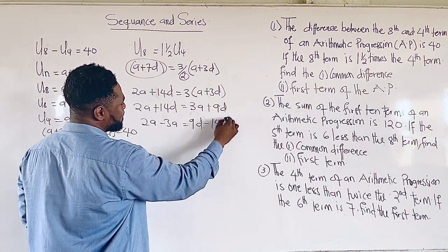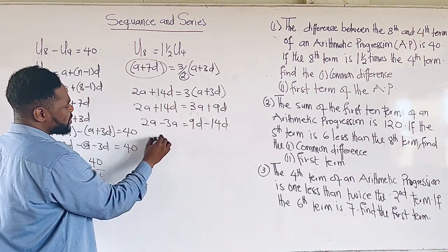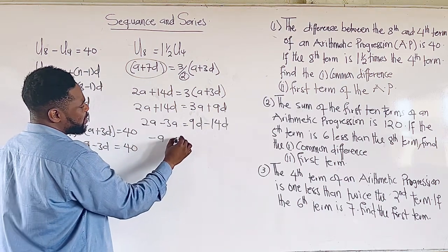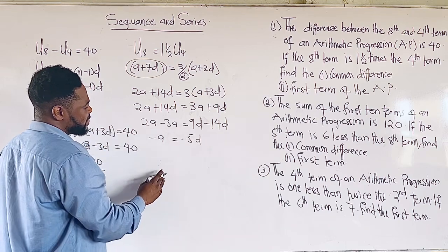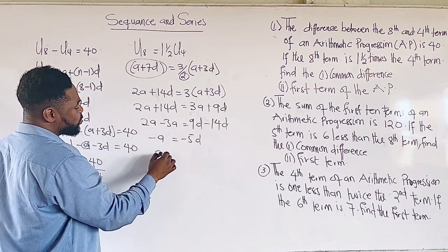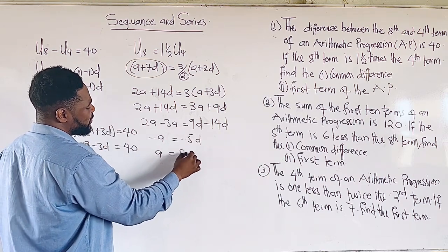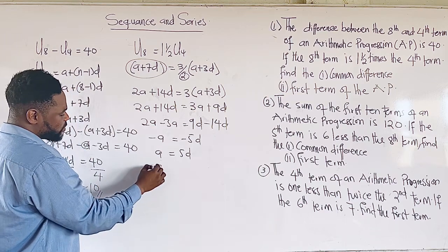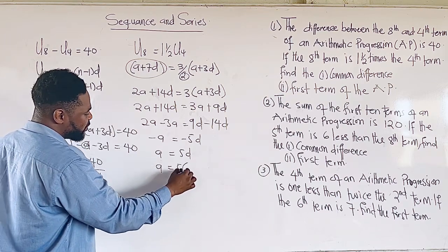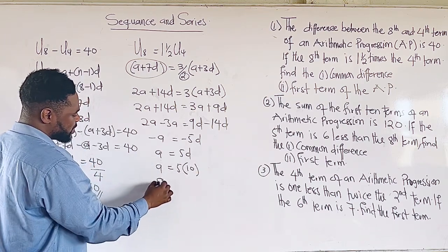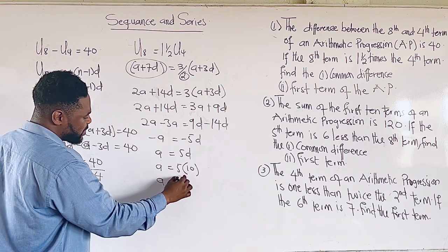So minus 14D. This will give us -A = -5D. We divide through by -1, we are going to have A = 5D. So our A is going to be 5 multiplying 10, and our A is going to be 50.